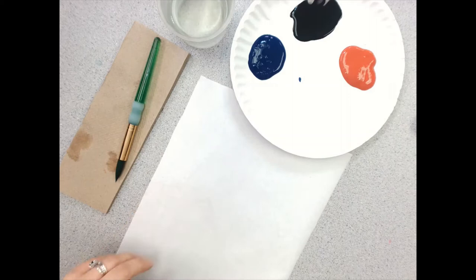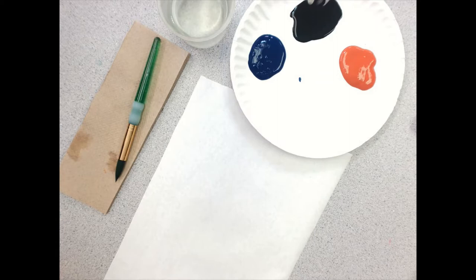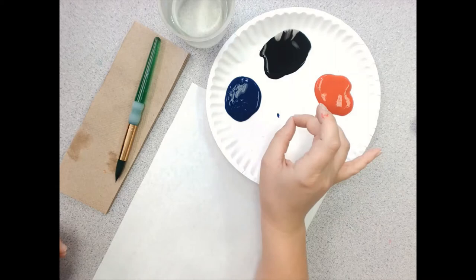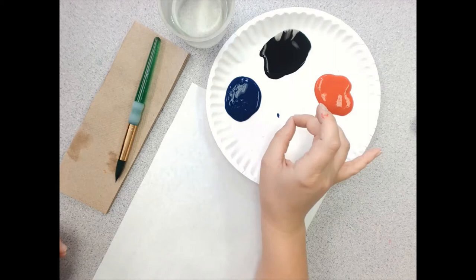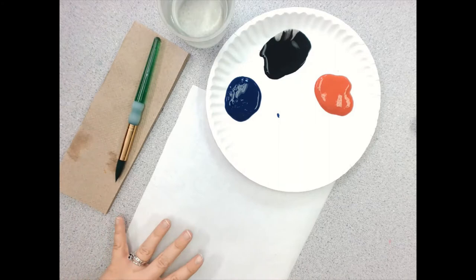Today we're talking about tint and shade. So tint is where you create a color or a hue and you add white to it. Shade is when you take a hue, your color, and add black to it. We're going to be using both tint and shade in our artwork today. And that element of art is called value.